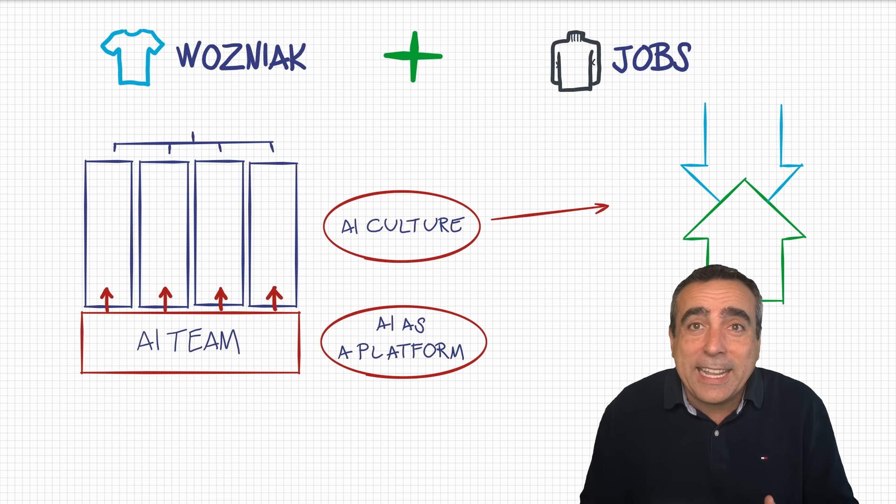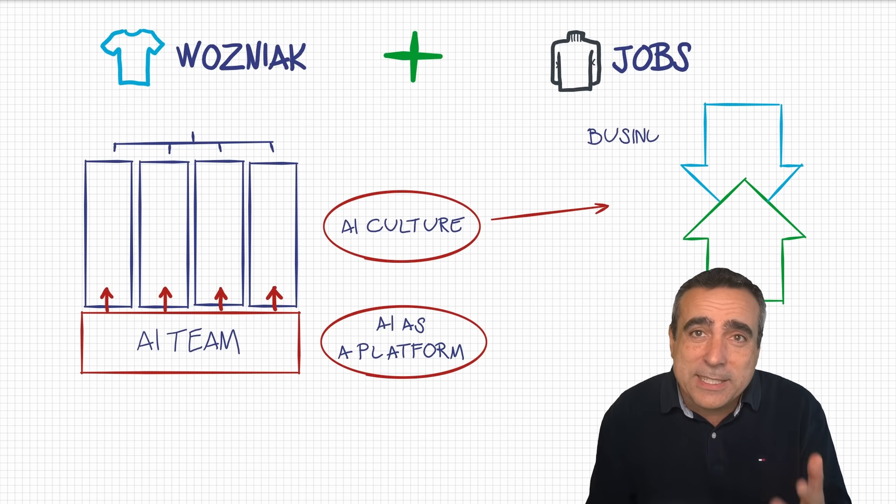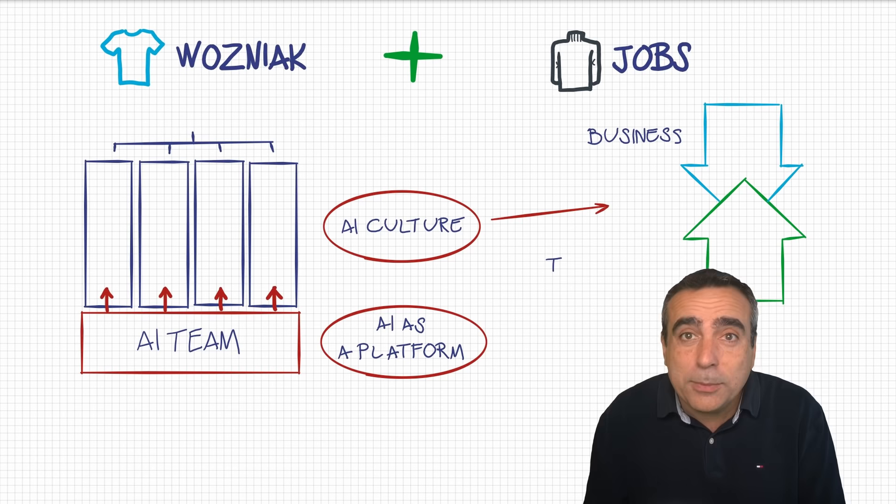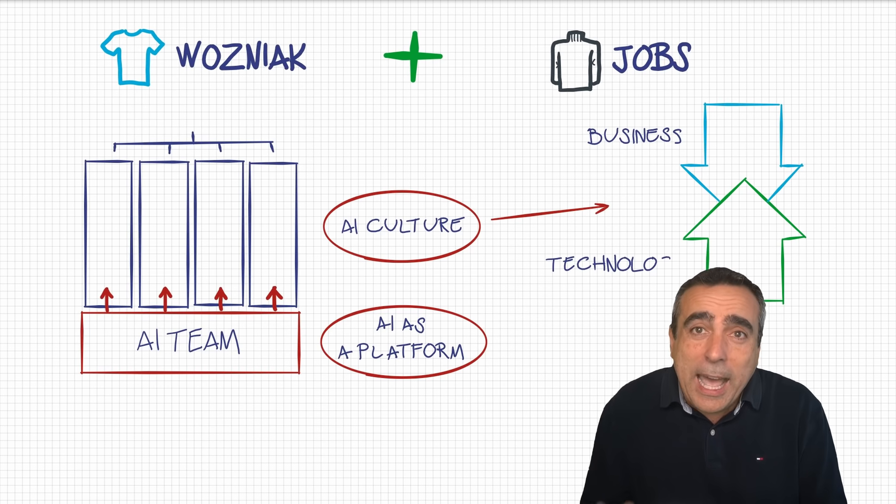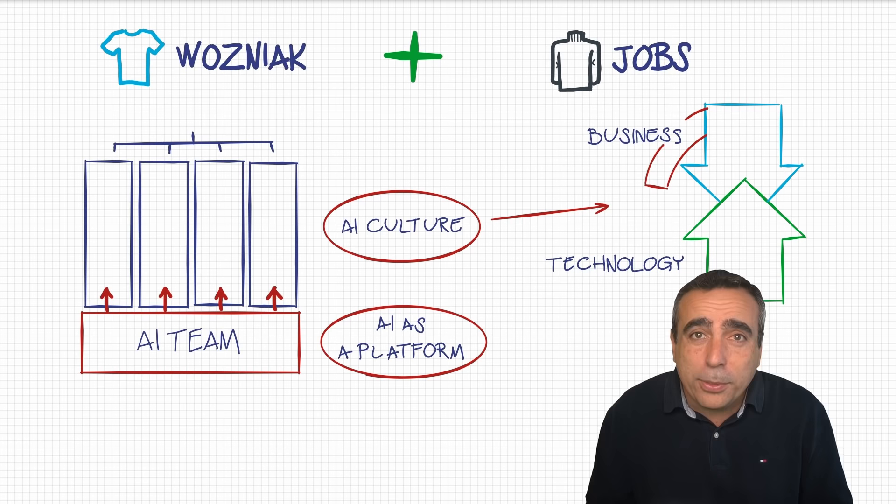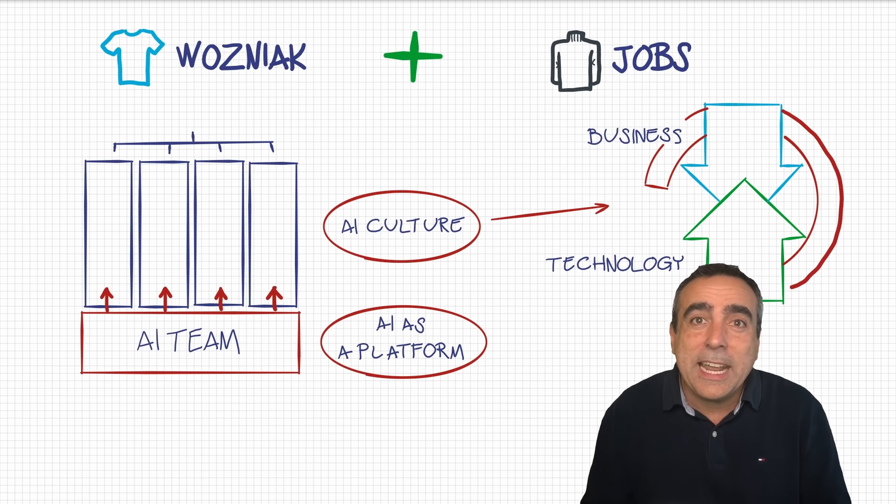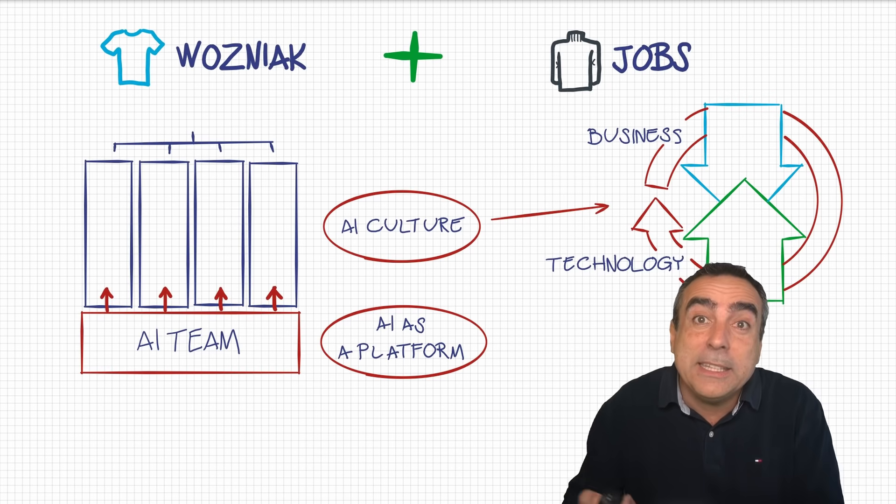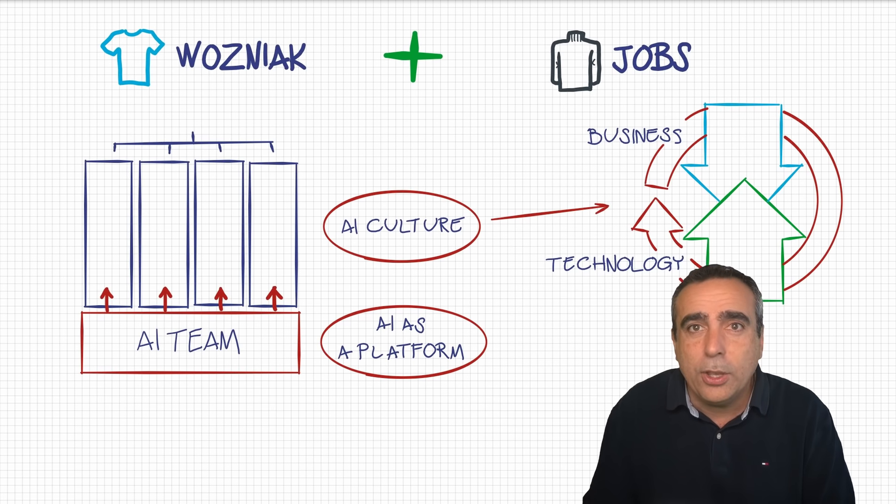The business will be looking at AI like top down, so from the business to the technology, like Jobs. Then you are going to have the AI team the other way around. They're going to be looking at AI bottom up, so from the technology to the business, like Wozniak. So both are going to be working together in a continuous cycle. So they are partnering on the ideation of the scenarios that they want to target and then the implementation of those scenarios in quick iterations, where they develop the solution together, the business and technology. They move it to production and they learn by monitoring the solution continuously.